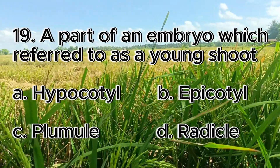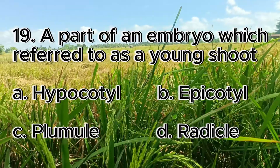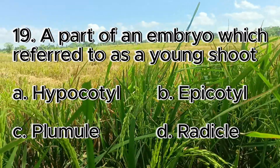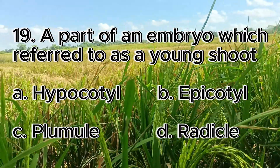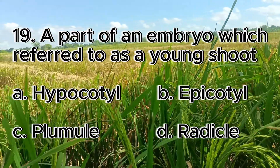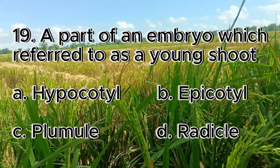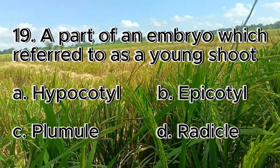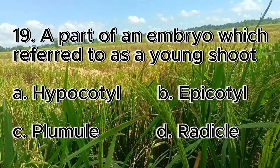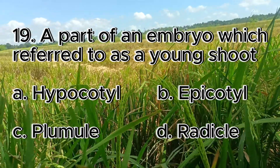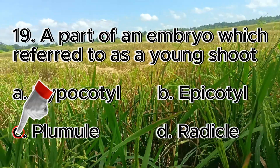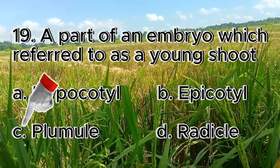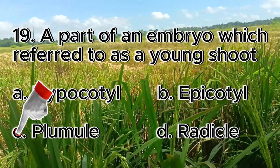Number 19. A part of an embryo which is referred to as a young shoot. A. Hypocotyl, B. Epicotyl, C. Plumule, D. Radicle. The answer is letter C, plumule.